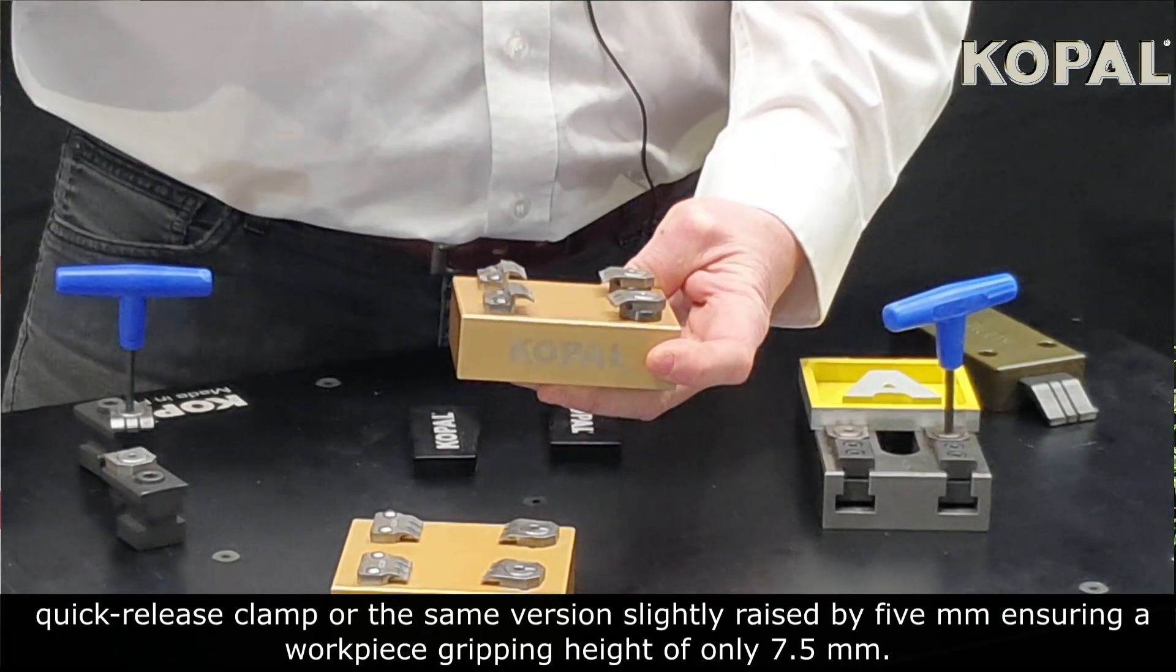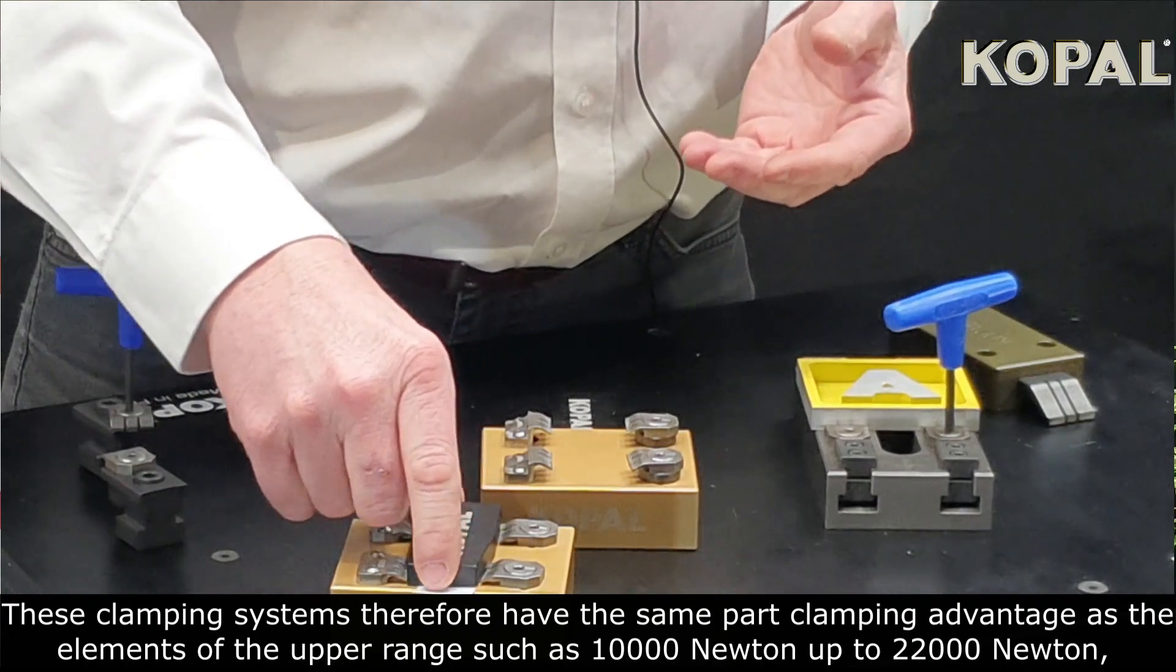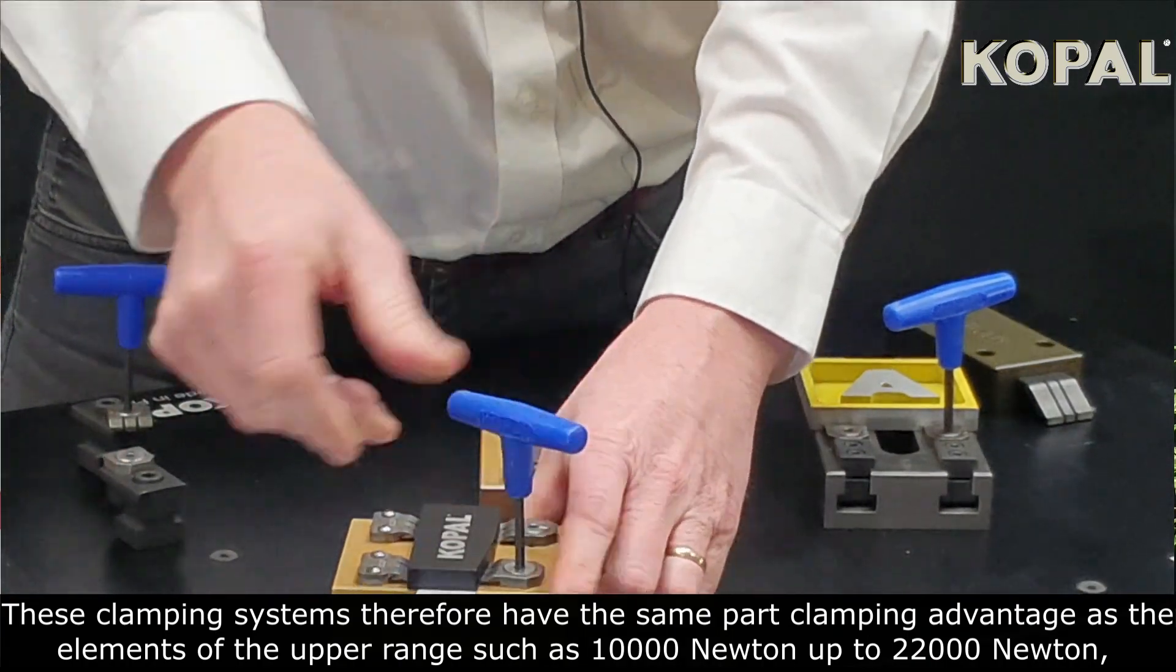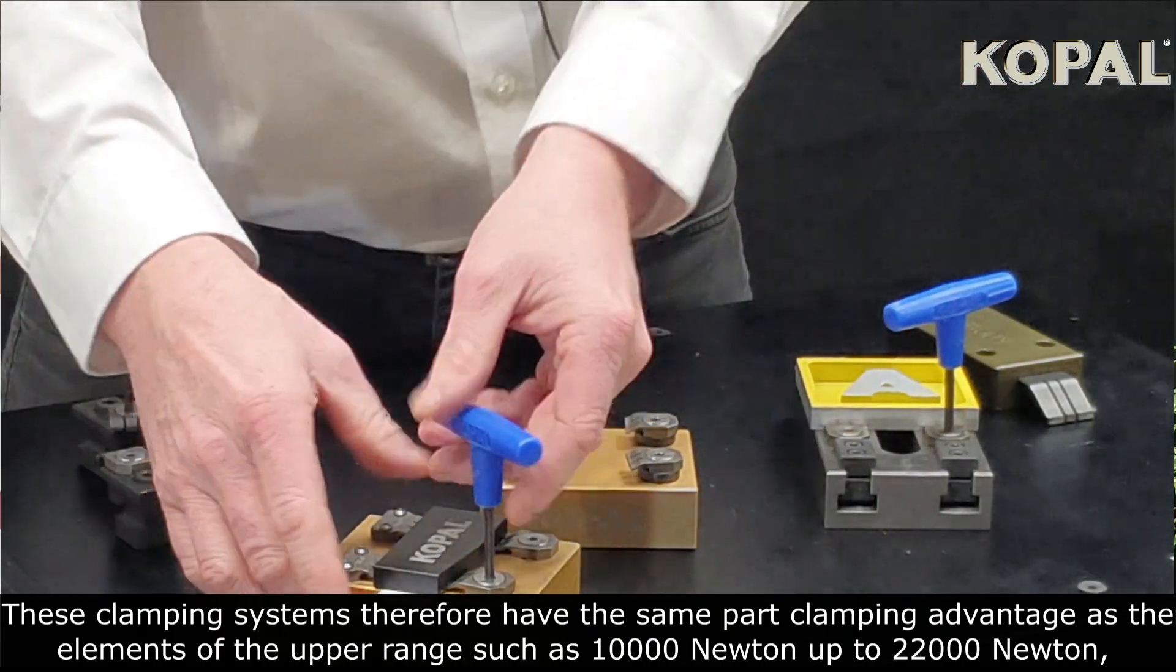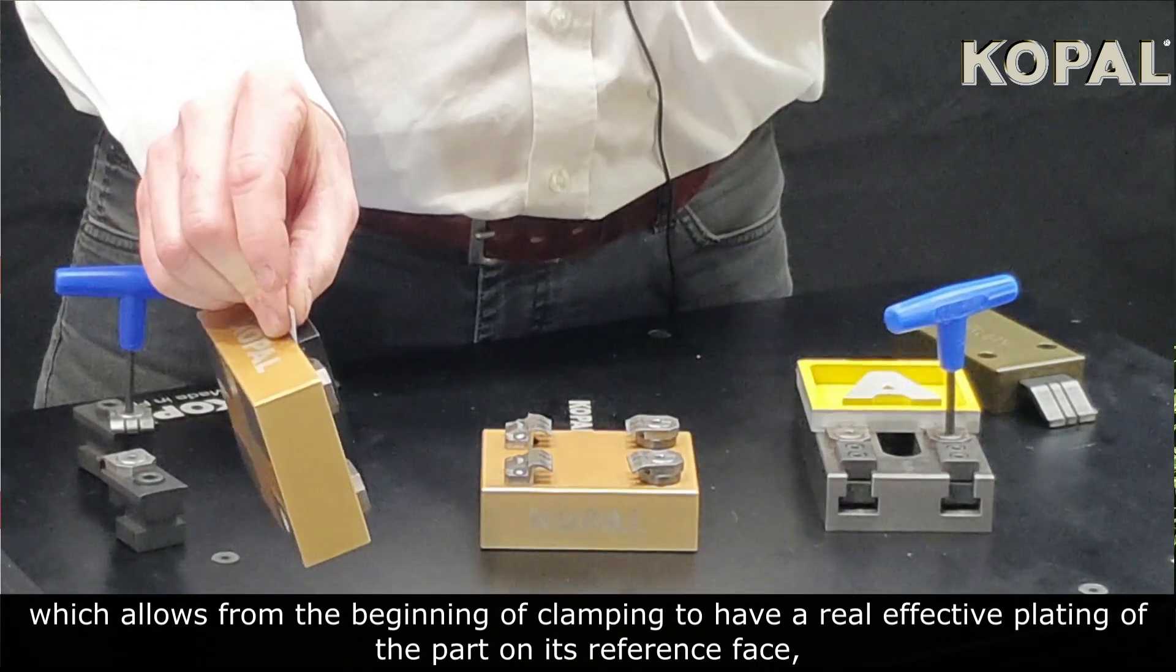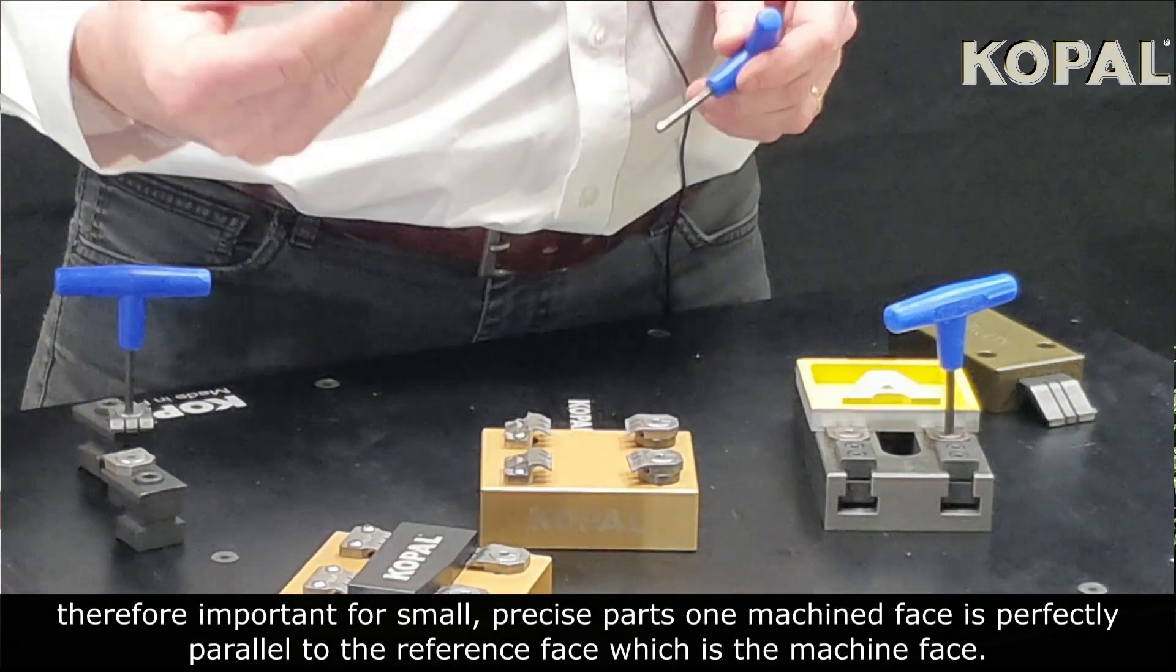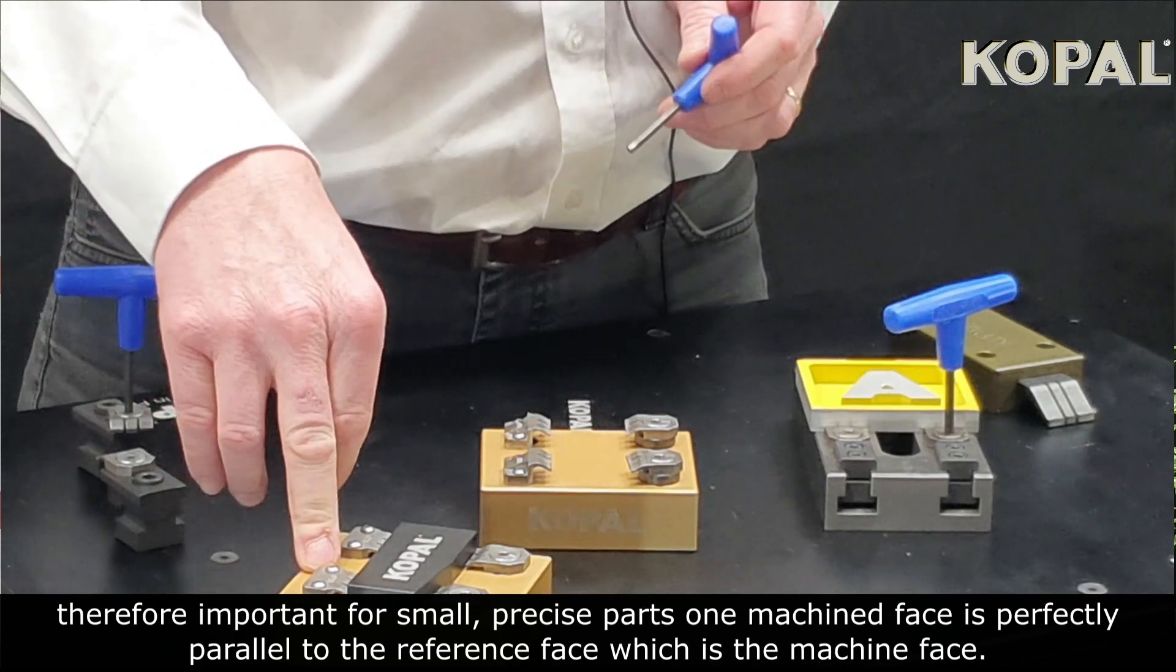These clamping systems have the same part clamping advantage as the elements of the upper range, such as 10,000 newtons up to 22,000 newtons, which allows from the beginning of the clamping to have a real effective plating of the part on its reference face. Therefore, important for small precise parts, one machine face is perfectly parallel to the reference face.